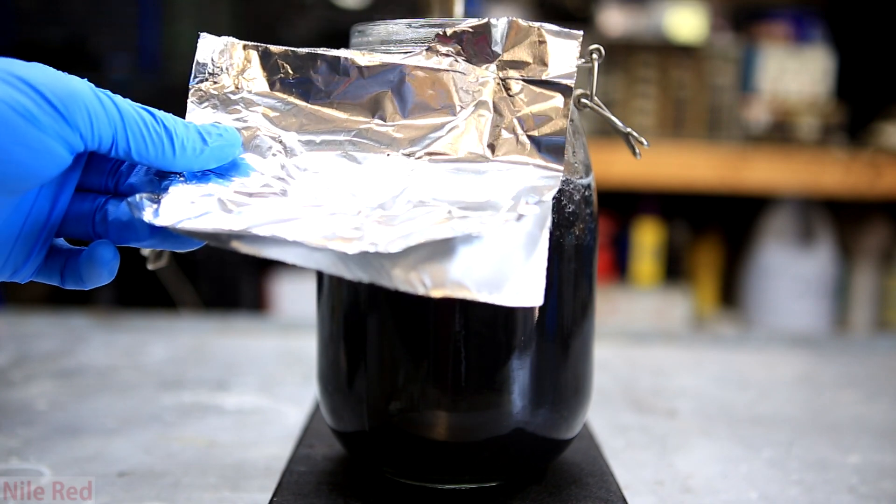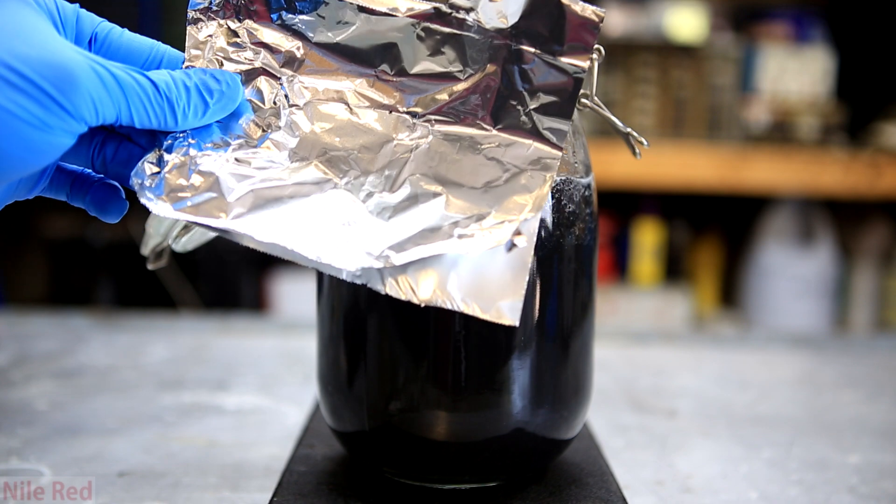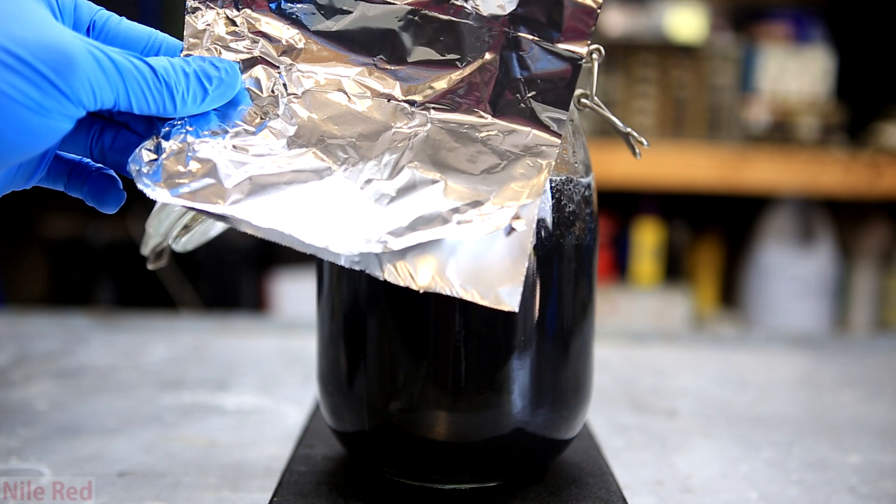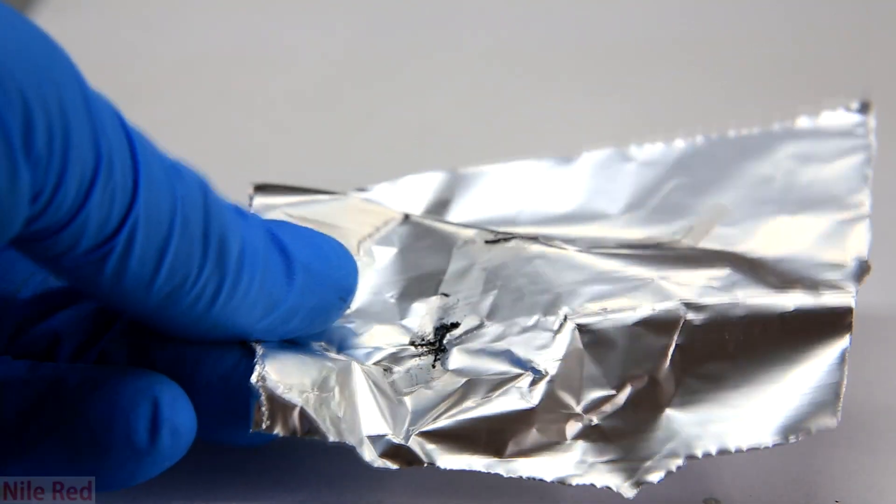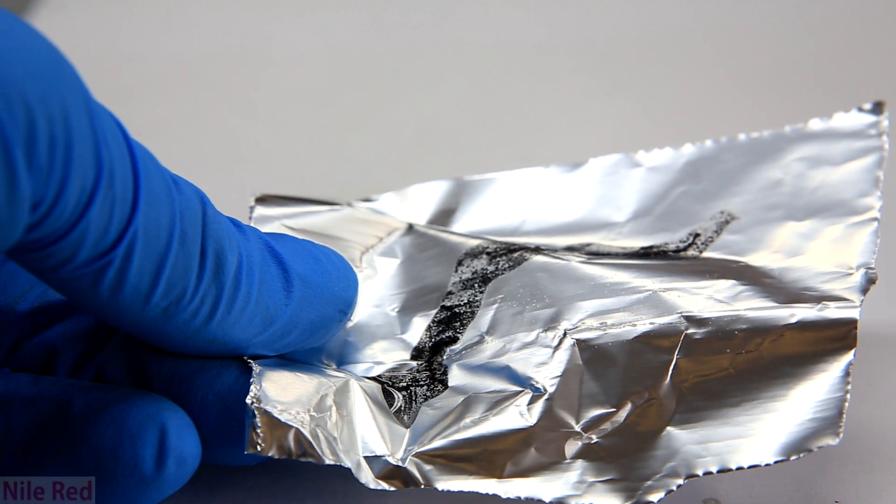If a clear solution produces a black precipitate, then there's still bismuth chloride in solution. If it stays clear as shown here, then the reaction is complete. If there's still bismuth chloride in the solution, it might look something like this.